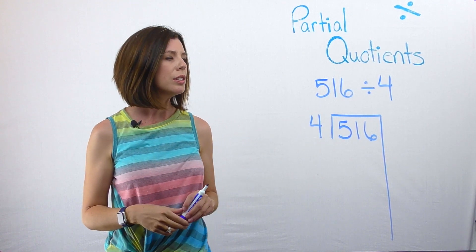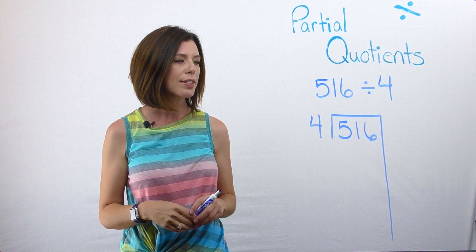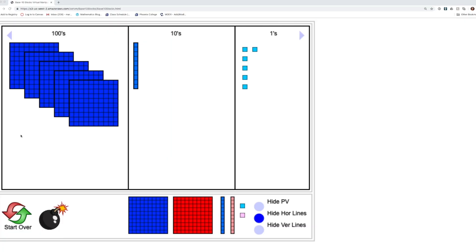Now I want to start looking at my base 10 blocks and look at the fact that I have 5 flats or 5 hundreds. I want to see can I put these into 4 groups. So I'm going to go ahead and put 1 flat in each of my, if I want to think of them as like piles, right?